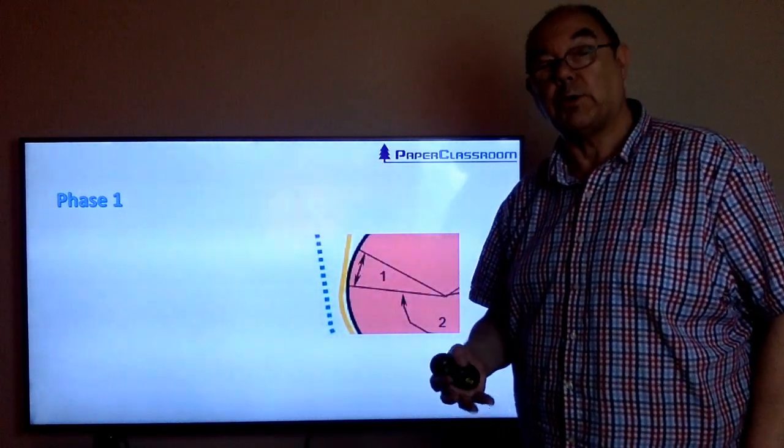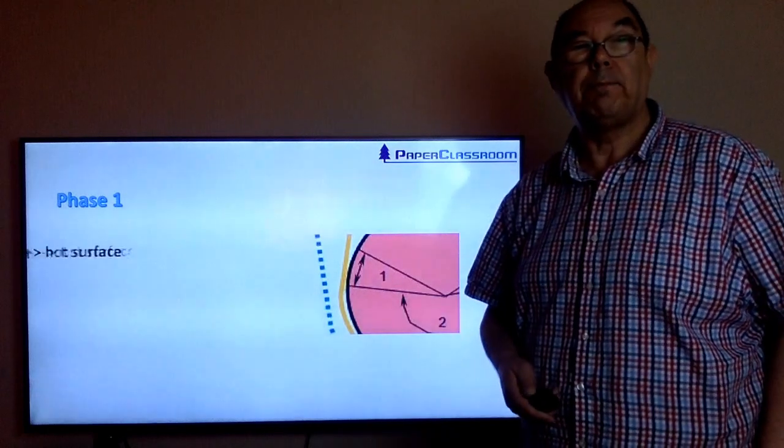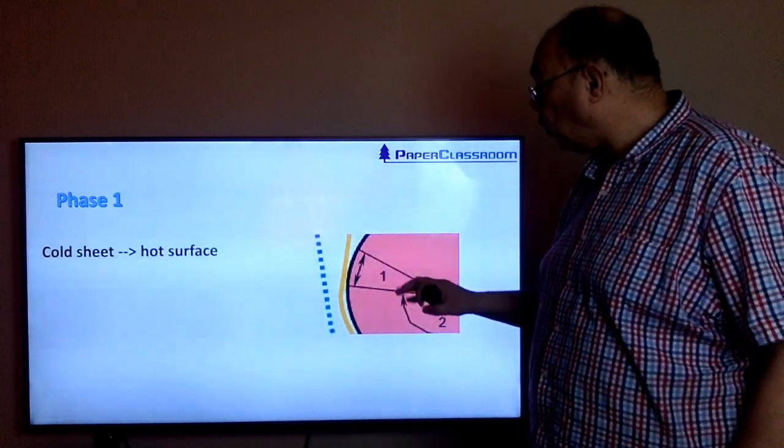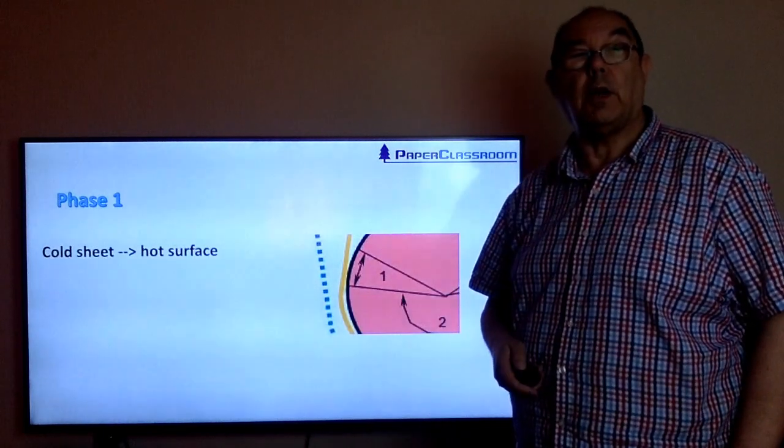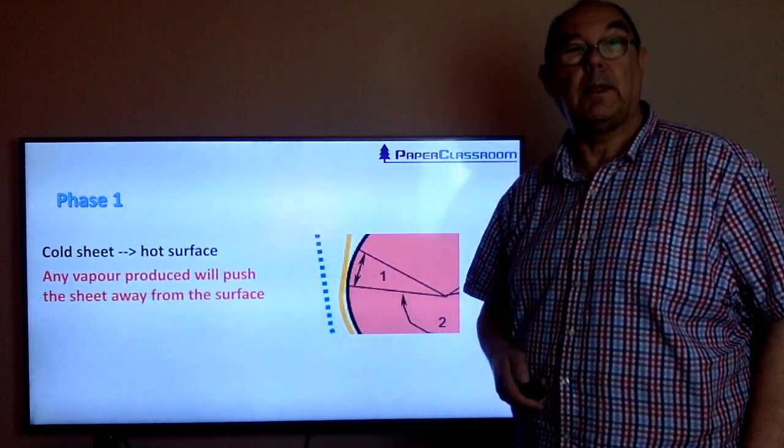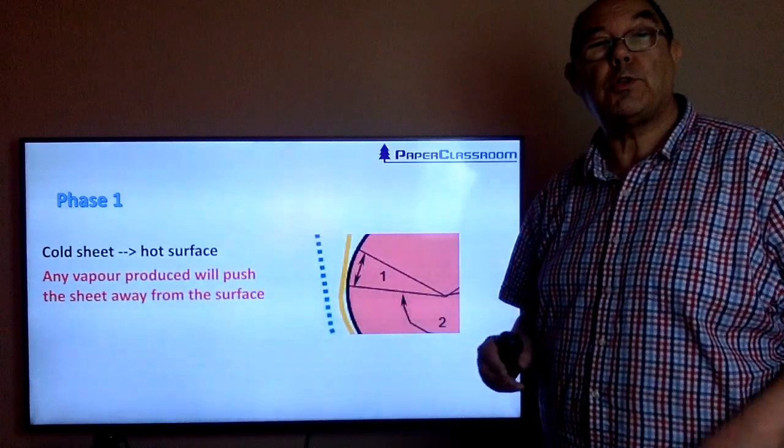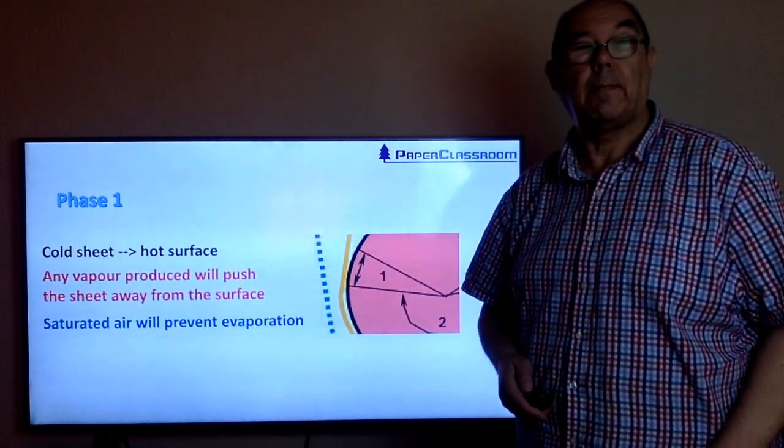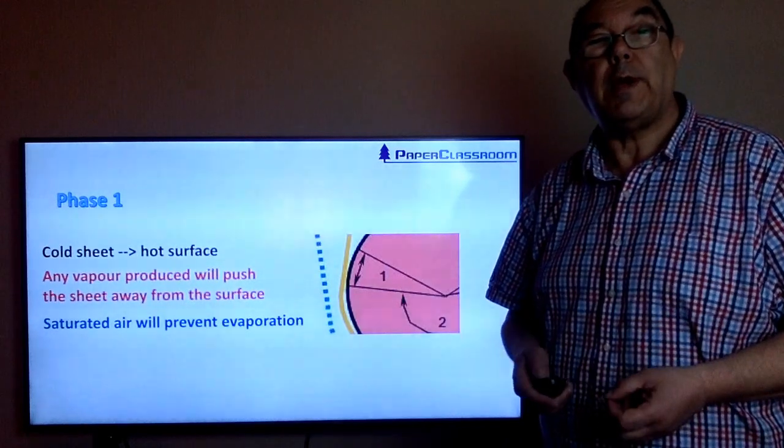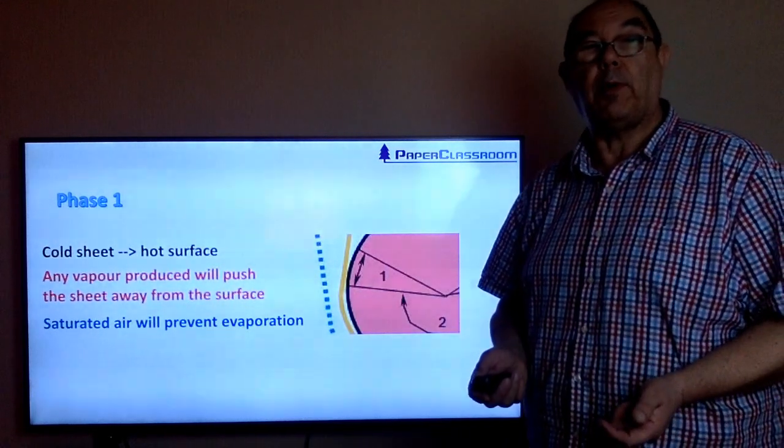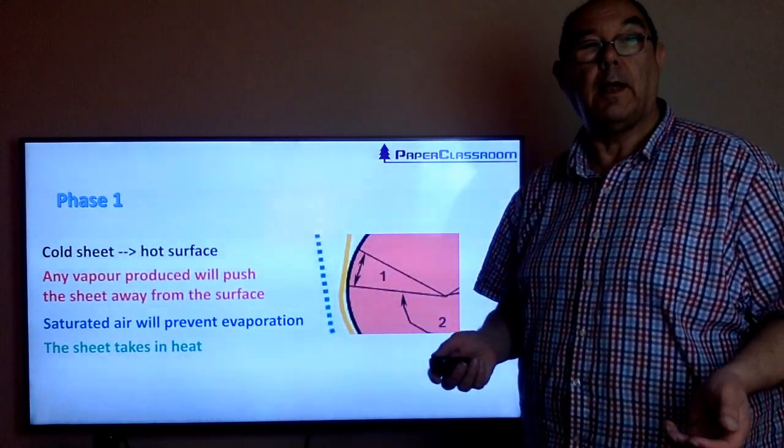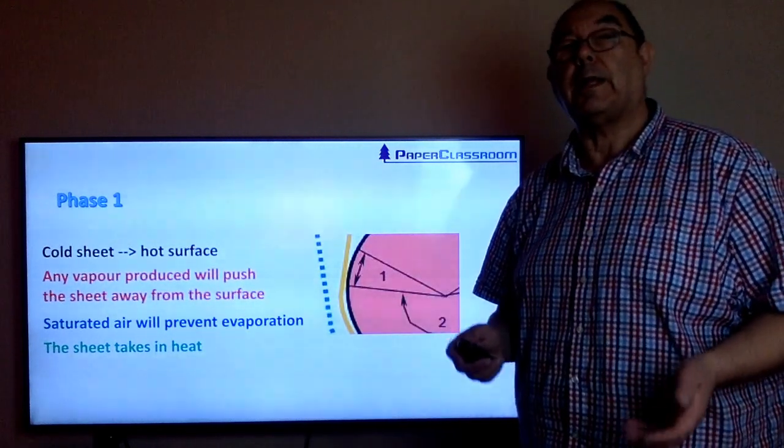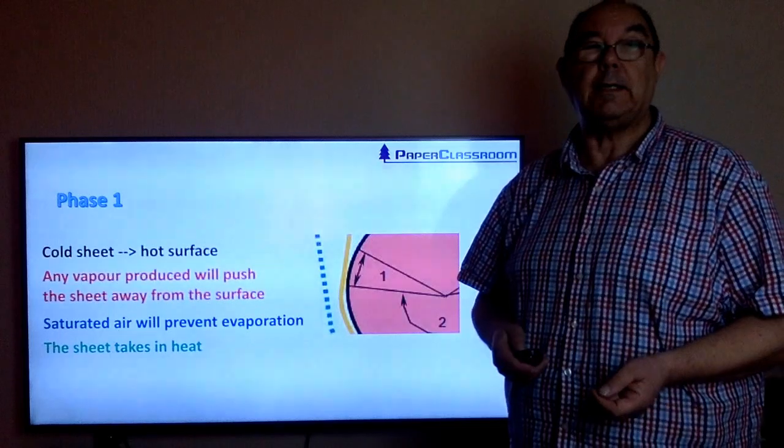So the sheet and its water content will just get warmer. The cold sheet is approaching a hot surface. Any vapor produced will push the sheet away from that surface, and saturated air will prevent evaporation. Therefore, the sheet itself will simply heat up. Nothing else will happen except a gentle heating of the sheet.